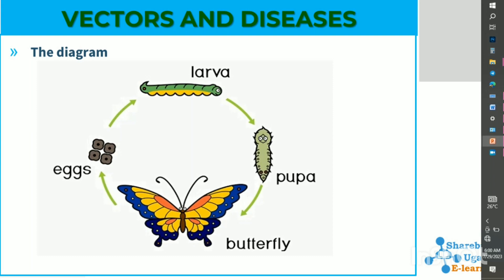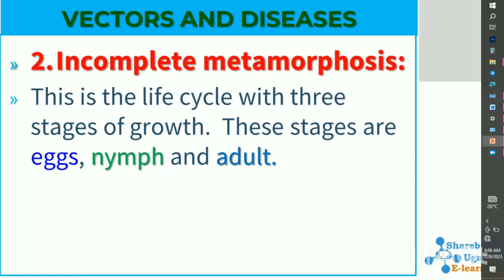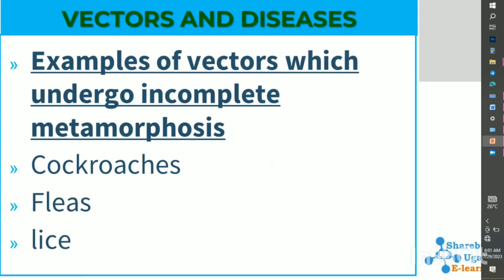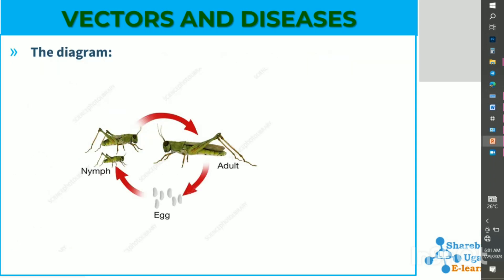Incomplete metamorphosis is the life cycle with only three stages of growth: the egg, the nymph, and the adult. Examples of vectors that undergo incomplete metamorphosis include cockroaches, fleas, and lice. This is a diagram of incomplete metamorphosis showing only egg, nymph, and adult.